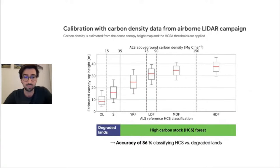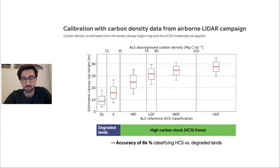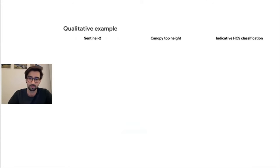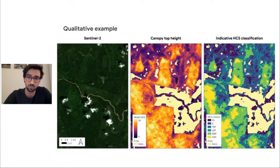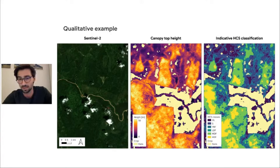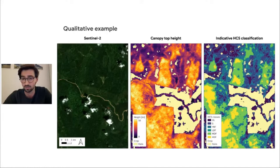The second step is to derive the HCS categories from these dense canopy height maps using carbon density data from airborne LiDAR campaigns. We see the distribution of estimated canopy heights for each HCS category, and when we use this data to train a second, much smaller CNN, we achieve an overall accuracy of 86% classifying high carbon stock forests against degraded lands. A qualitative example shows the two steps side by side: the Sentinel-2 input image on the left, the predicted canopy height map in the center, and the indicative HCS classification on the right — bluish colors indicating degraded lands. We also visualize an oil palm plantation map to highlight and exclude plantations from the HCS categories.